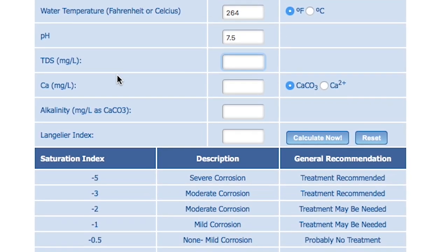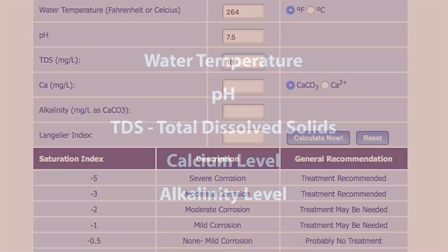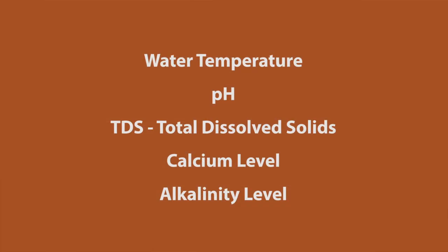What you need to use it are five pieces of information: water temperature, pH, TDS — which is total dissolved solids — the calcium level, and the alkalinity level of your water.